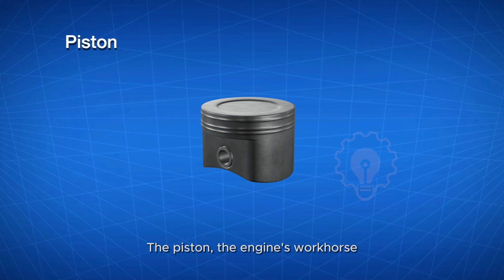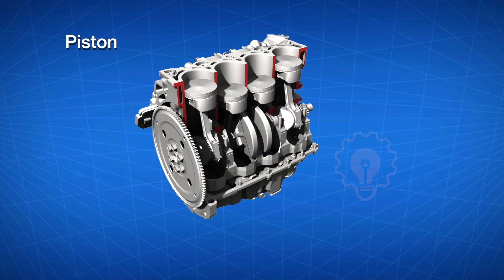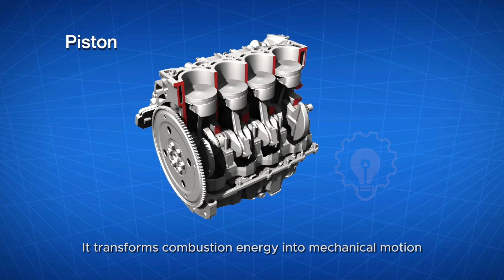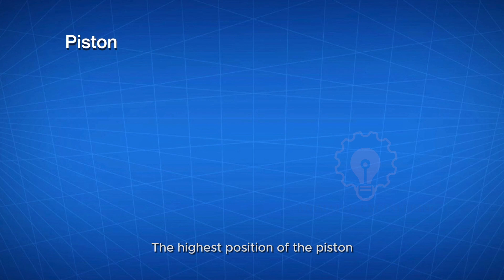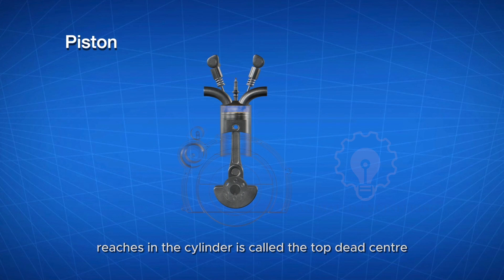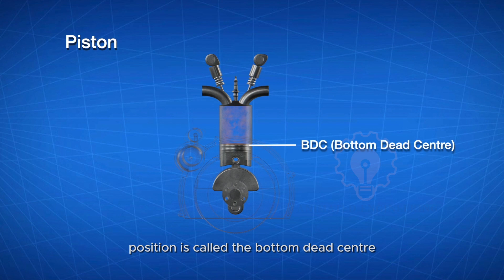Piston: The piston, the engine's workhorse, moves up and down within the cylinder. It transforms combustion energy into mechanical motion, driving the crankshaft and propelling the vehicle forward. The highest position of the piston reaches in the cylinder is called the top dead center and the lowest position is called the bottom dead center.